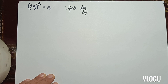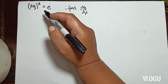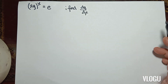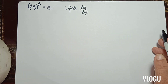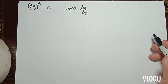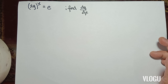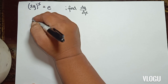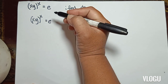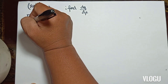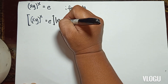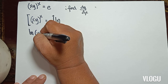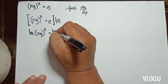The next example: x times y raised to x is equal to e. This is a variable raised to a variable, so we are going to multiply with ln. Therefore we will have ln of x·y raised to x equals ln of e.